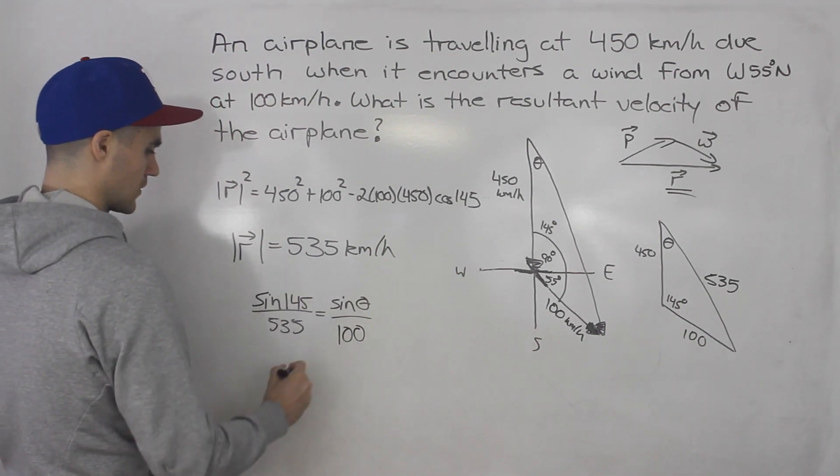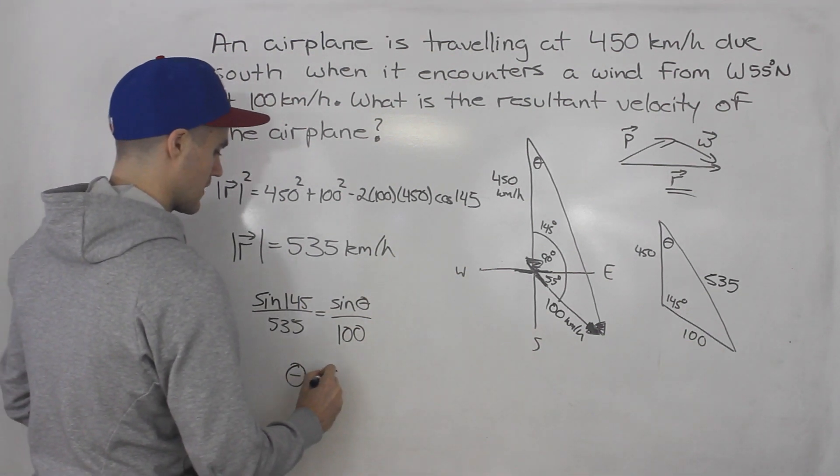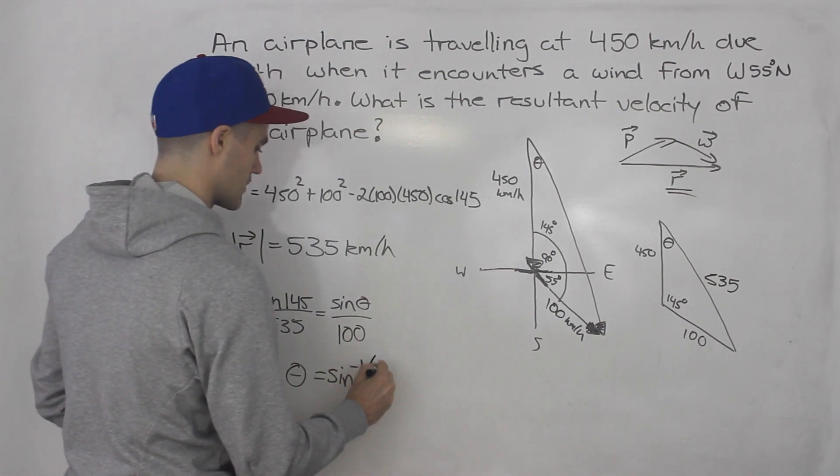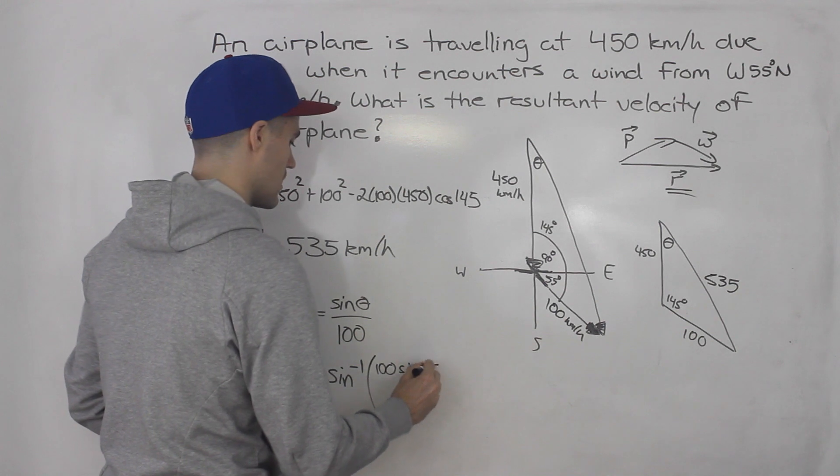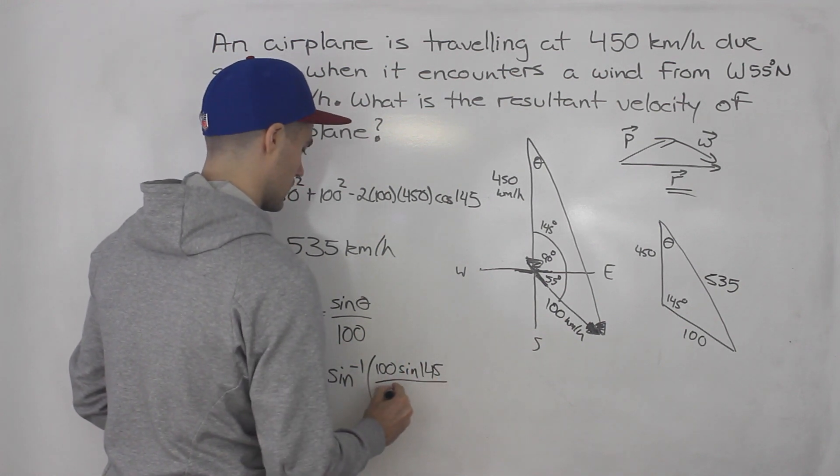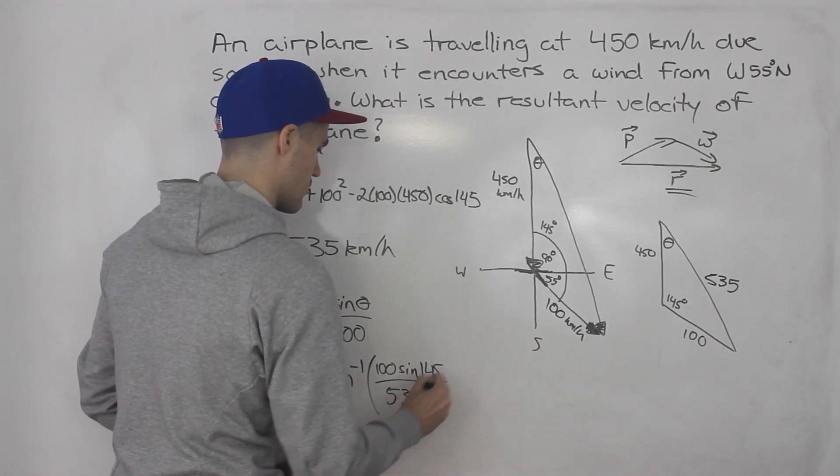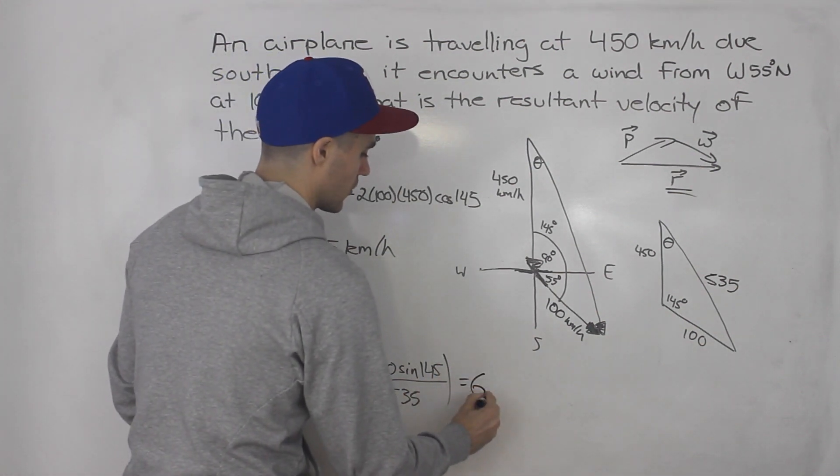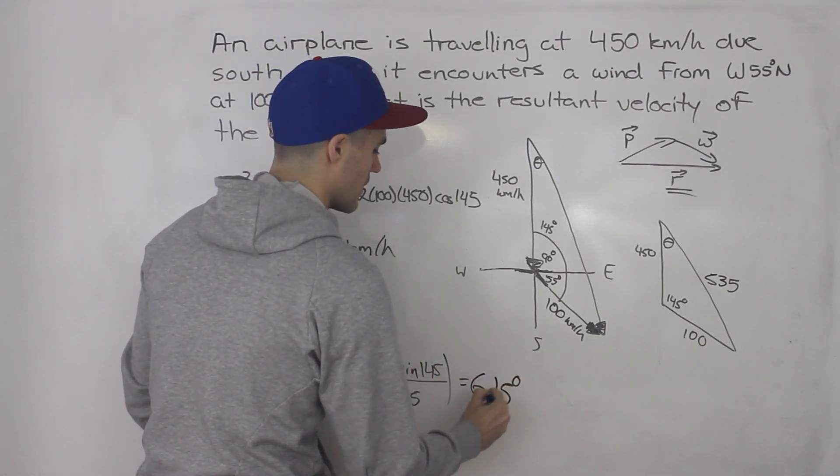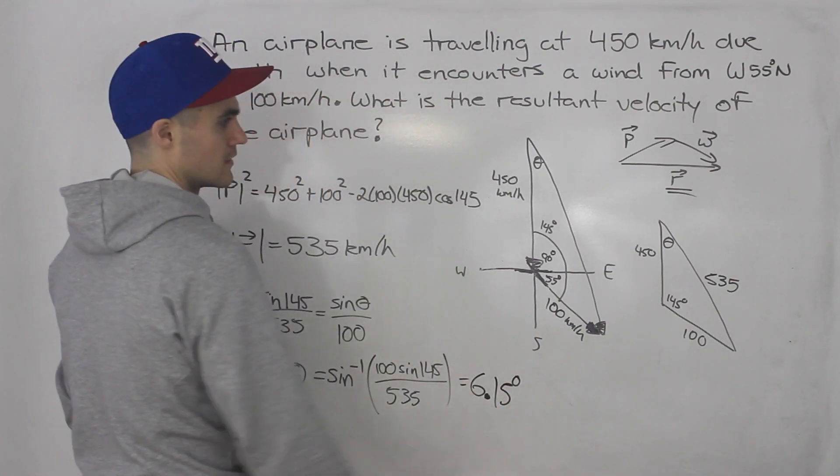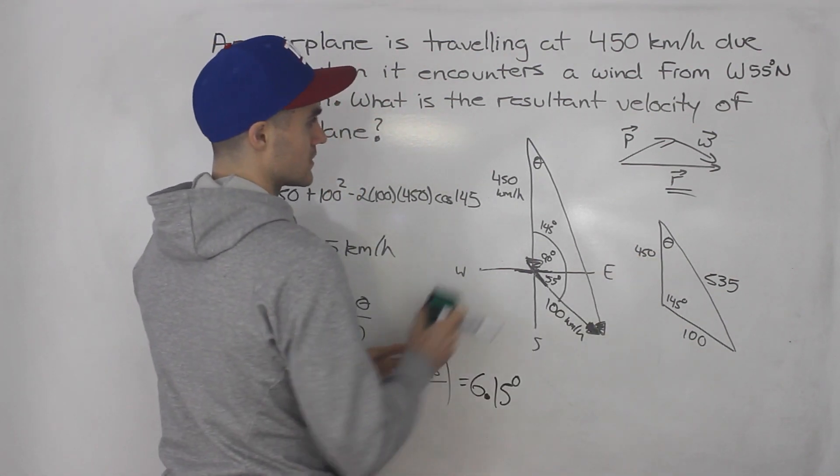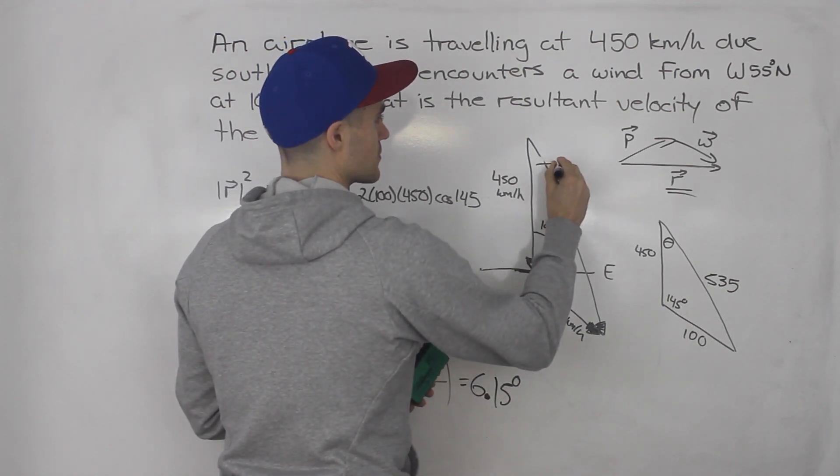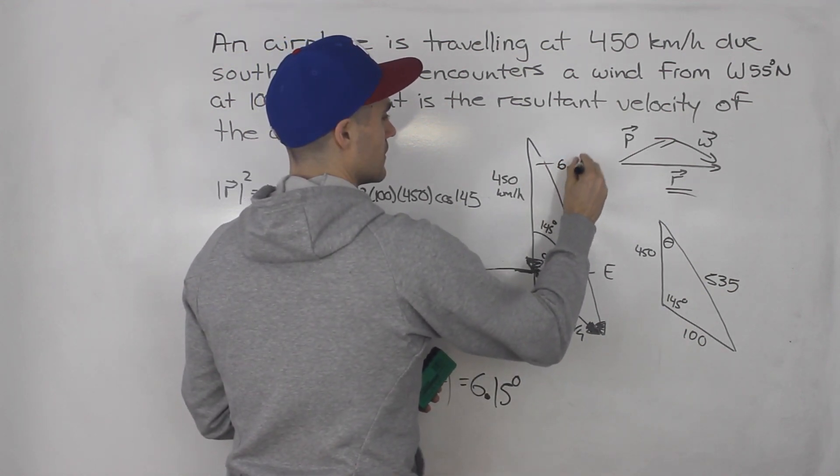Okay, and then when we cross multiply, when we isolate for that theta, we'll basically be taking the inverse of 100 times sine of 145 all over 535. And when you do that in your calculator, you end up getting 6.15 degrees. So that there's 6.15 degrees, and then maybe let's write that angle here, 6.15 degrees.